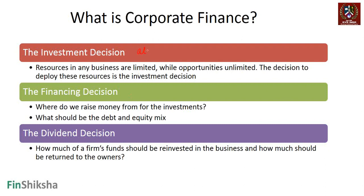The investment decision is about where you allocate resources. Resources are limited — there is only a finite amount of money every business has. Opportunities, however, are unlimited: you could use that money in marketing, building a new factory, or a variety of other projects. The decision on where to deploy these resources is the investment decision. The logic could be to maximize revenue, share price, profit, or societal impact — but any decision about allocation of a company's resources falls under the investing decision.